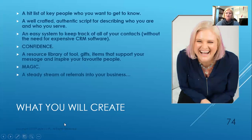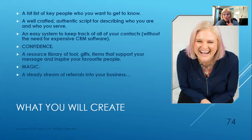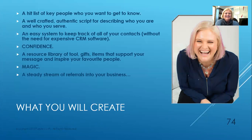What you're going to create: a hit list of key people you want to get to know. This is called Five Favorite People on purpose, because once I have five people that I have built a relationship with — that I can go to every time I need new clients and say, 'Hey, have you got anyone I can help?' — I'm going to help you craft that specific message. But to get to those five, we may need to have conversations with 50 people. This is where the practice comes in, and this is how you refine who your target is going to be. You will also create a well-crafted, authentic script for describing who you are and who you serve, and an easy system to keep track of all your contacts without the need for expensive CRM software — it's called Excel, and I'll teach you how to use it.